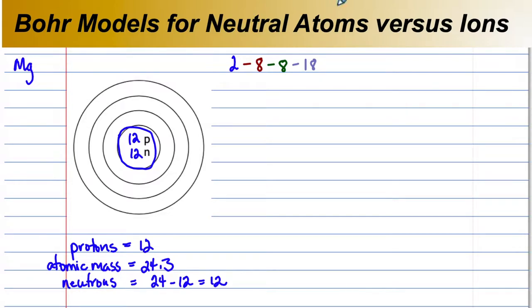But the periodic table doesn't show electrons. We have to assume that because there are 12 protons, for a neutral atom, we would have 12 electrons.